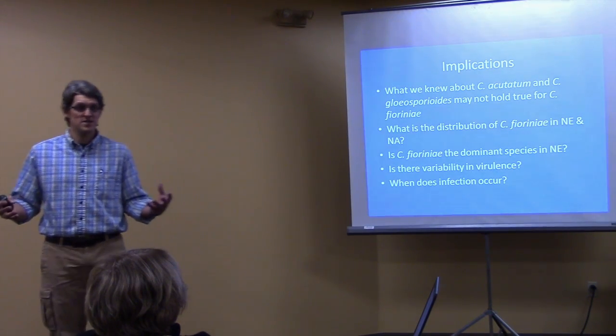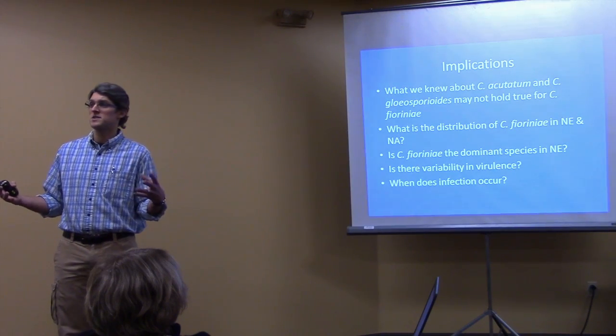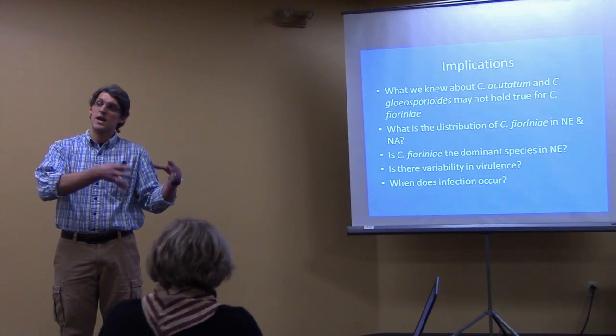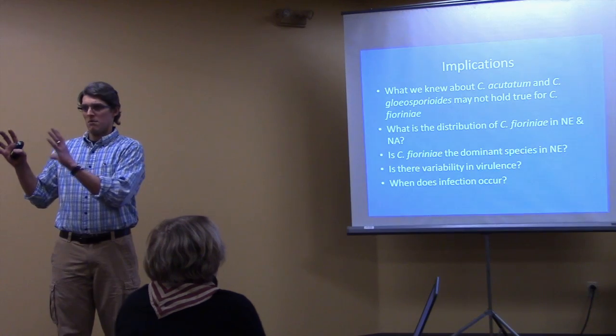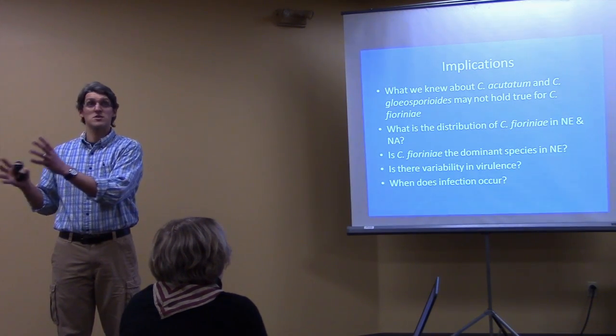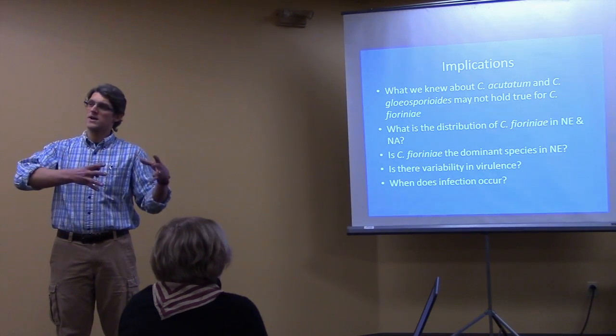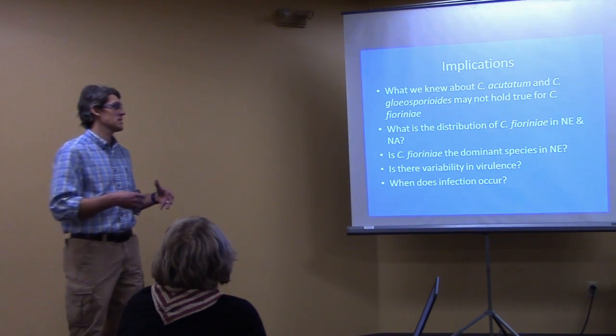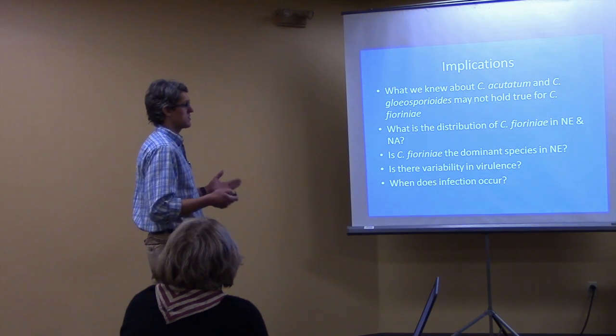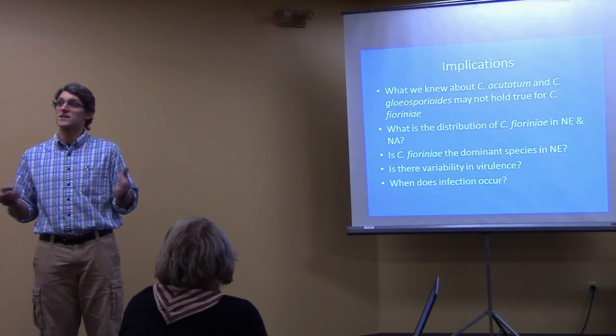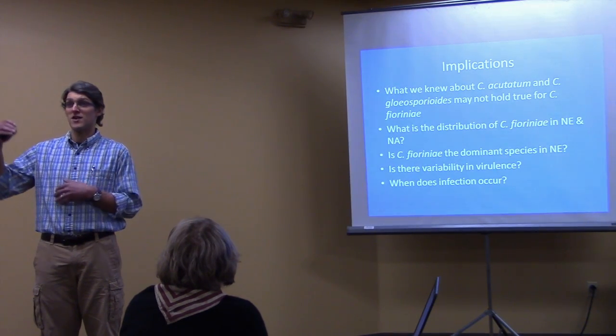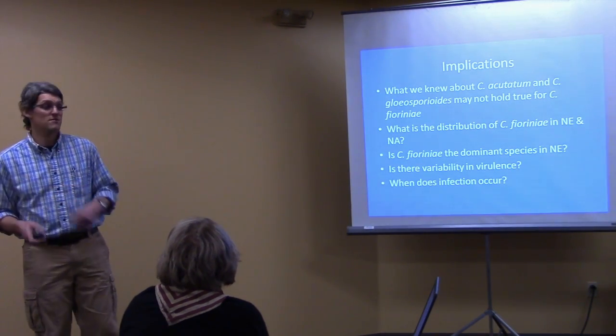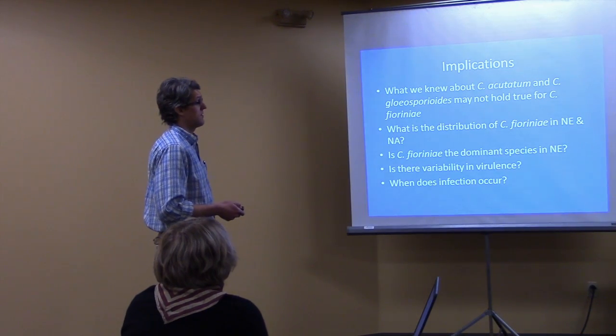And the implications of this is that all of our bitter rot management strategies have been based on this organism called Colletotrichum acutatum, but that's not what we actually have here. So the question is, and most of those were developed for the mid-Atlantic and southern states, so the question is are those things going to work for us? And so we're basically developing new epidemiological studies for this particular organism and then trying to understand its distribution and also trying to understand if it infects more things than apple. So is the strain that infects strawberry the same one that infects apples? Is the one that infects blueberry the same one that infects apples? That's the importance of that phylogenetic study.